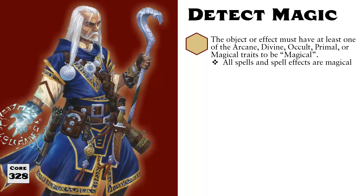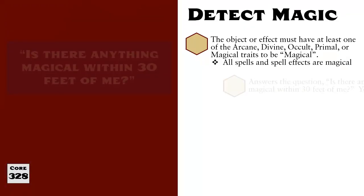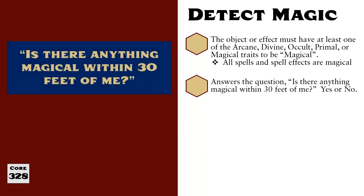At its core, casting Detect Magic answers a simple yes-no question: is there anything magical within 30 feet of me? It doesn't tell you what object is magical, or in what direction the magical object is, or if it is powerful magic or weak magic, or how many different magical objects there are, or anything else. It only tells you yes or no — is there something magical within 30 feet of you.